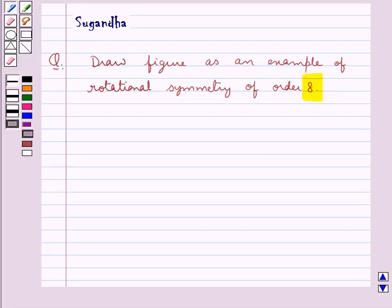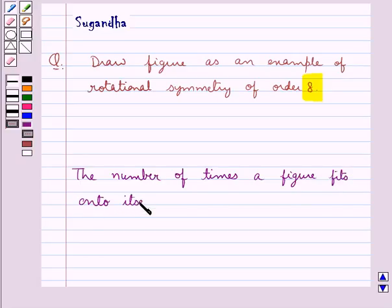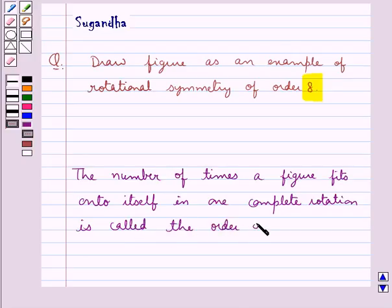First we define the order of rotational symmetry. The number of times a figure fits onto itself in one complete rotation is called the order of rotational symmetry.